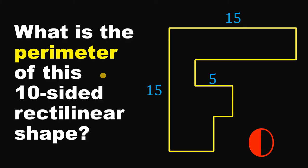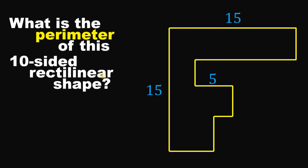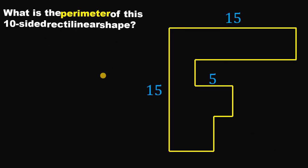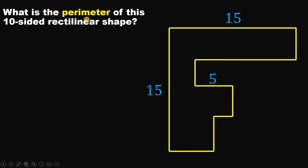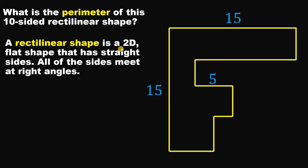Let's answer this question together. Our goal is to find the perimeter of this 10-sided rectilinear shape. What is a rectilinear shape? A rectilinear shape is a 2D flat shape that has straight sides, and all of the sides meet at right angles.